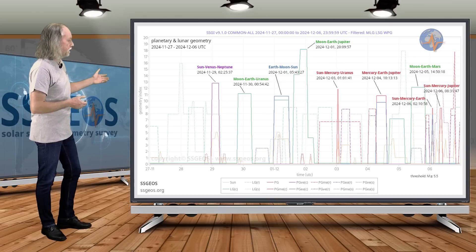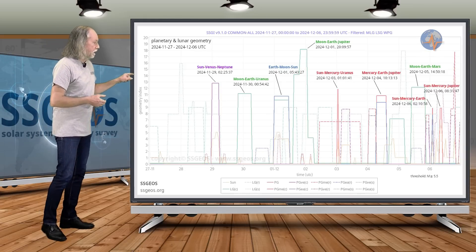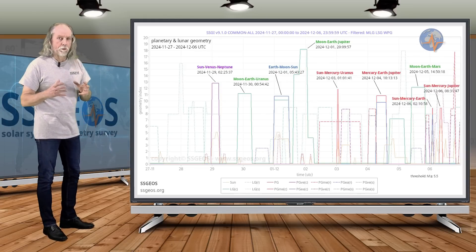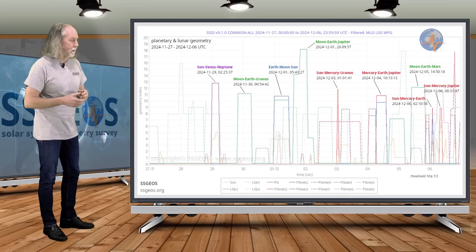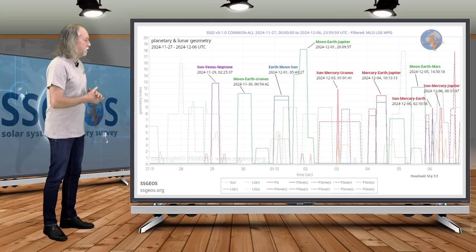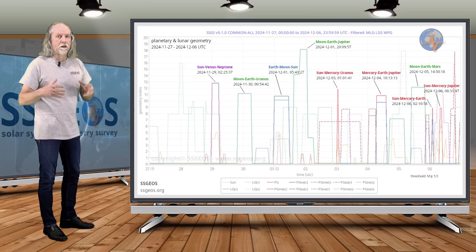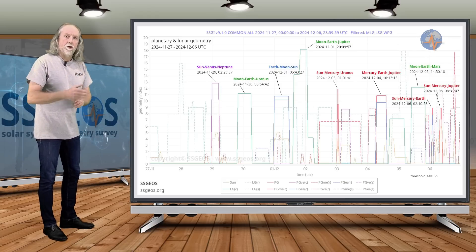So like I said, back to the SSGI graph. On the 6th, we see this convergence coming up with critical planetary geometry. But we are already close to these electromagnetic energy vectors. So I do expect some seismic increase, probably more than what we had in the previous time frame.